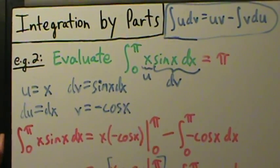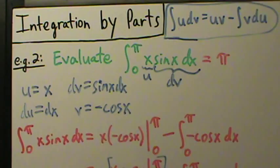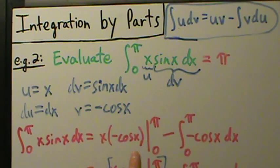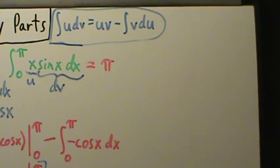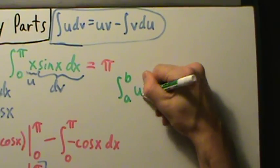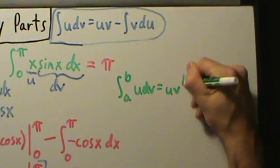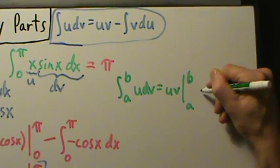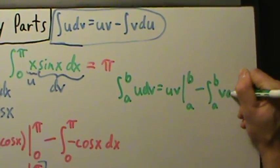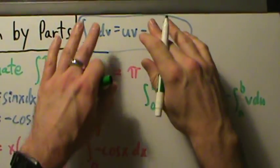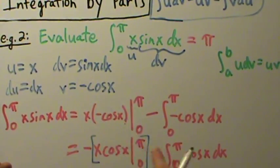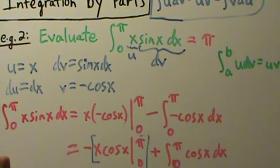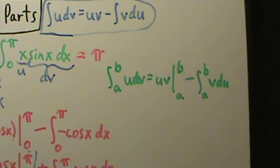The point we want to make is that if you use integration by parts for a definite integral, it's the exact same formula — you just have limits of integration. Evaluate uv from a to b, and integrate v du from a to b. In general: the integral from a to b of u dv equals uv evaluated from a to b, minus the integral from a to b of v du. That's example two: integration by parts with a definite integral.